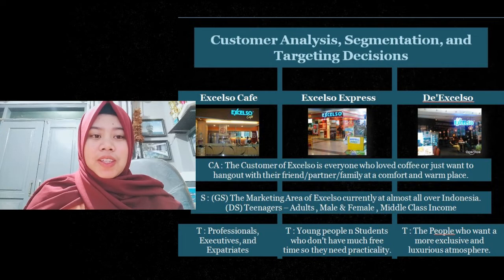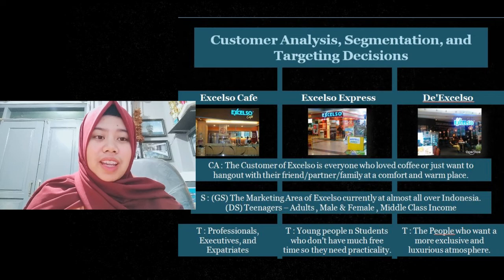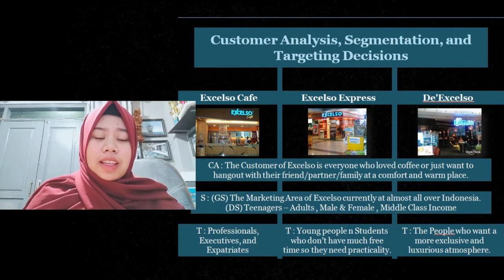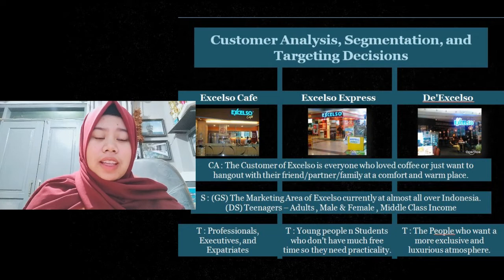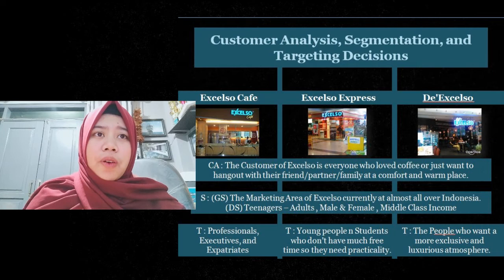For the segmentation decision, we divide it into two segmentations. The first is geographical segmentation and the second is demographic segmentation. The marketing area of Excelso is currently at almost all over Indonesia — Excelso has about 140 outlets in more than 30 cities. For demographic segmentation, the target is teenagers, young adults, male and female, and everyone who has a middle-class income.